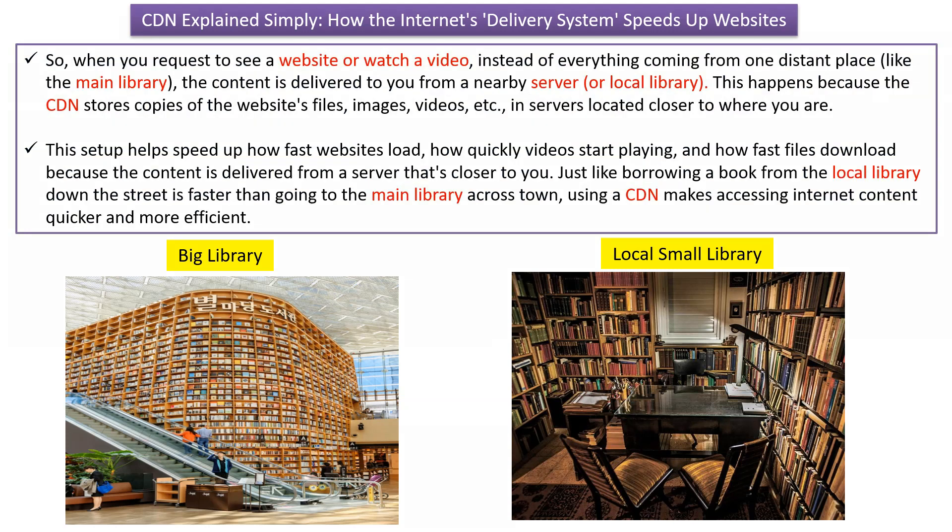So when you request to see a website or watch a video, instead of everything coming from one distant place, the content is delivered to you from a nearby server. This happens because the CDN stores copies of the website files, images, videos, etc., in servers which are located closer to you.